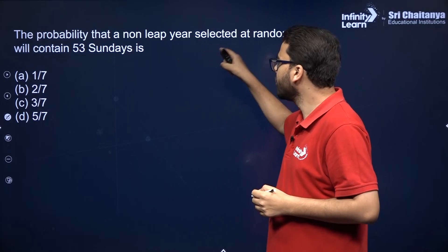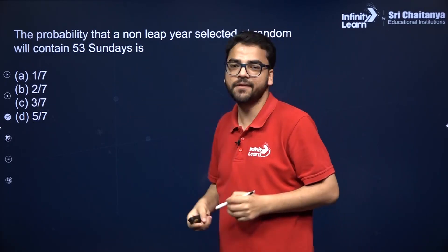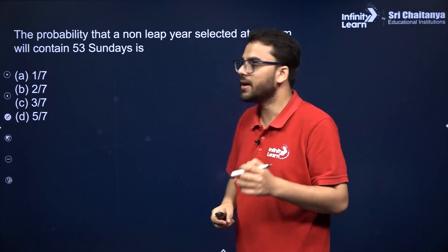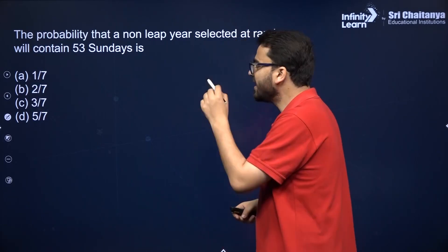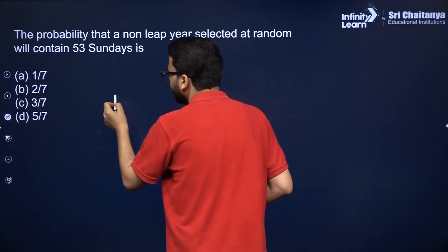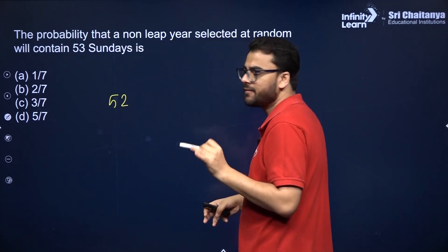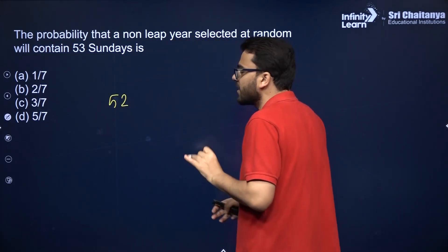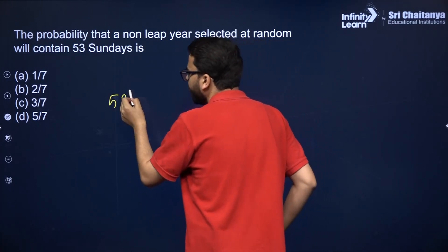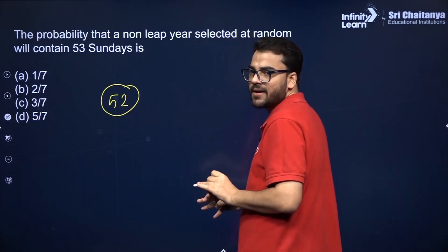What is the probability that a non-leap year selected at random will contain 53 Sundays? In a non-leap year, 52 weeks are there normally in a year — whether it is leap or non-leap. So 52 Sundays are already guaranteed.